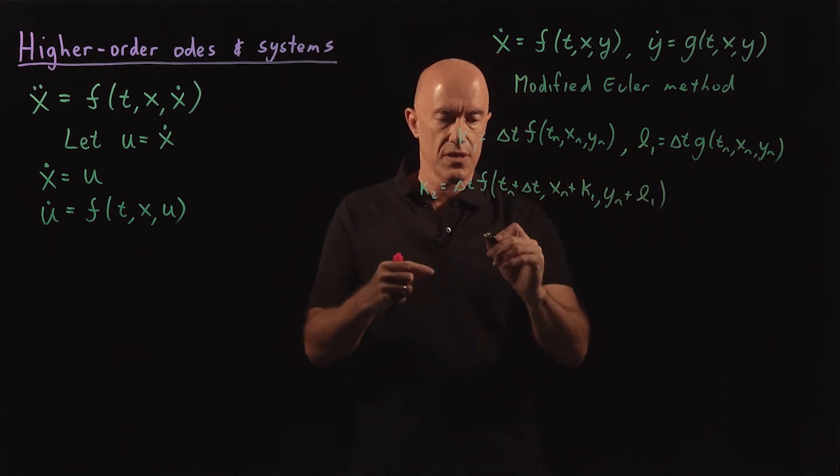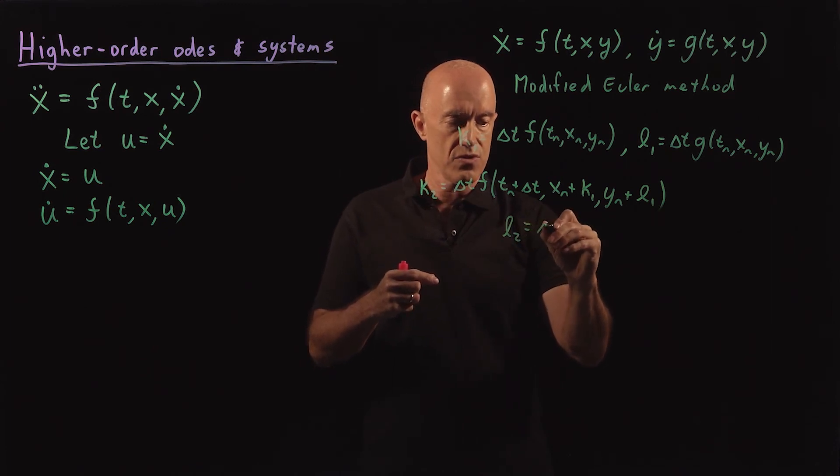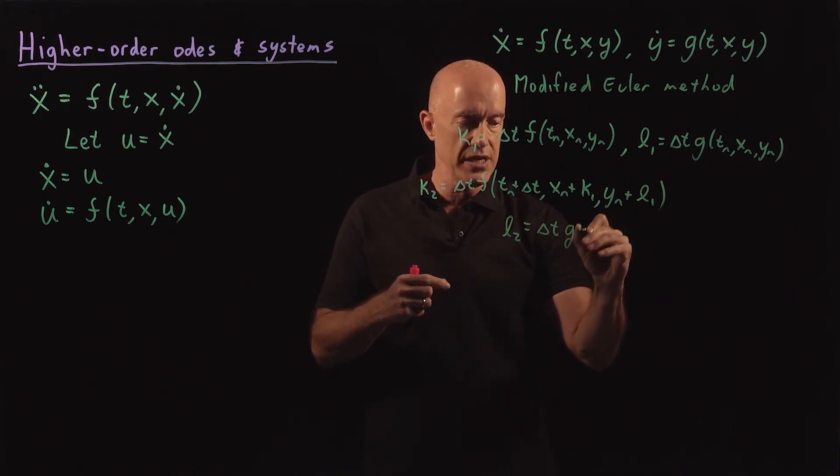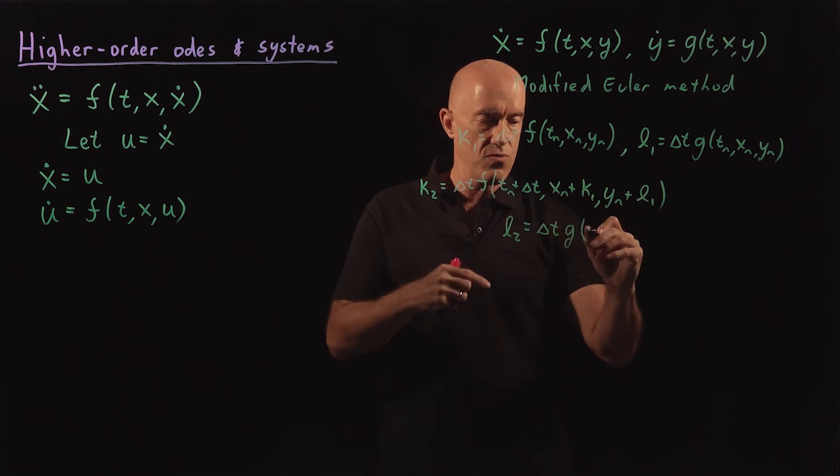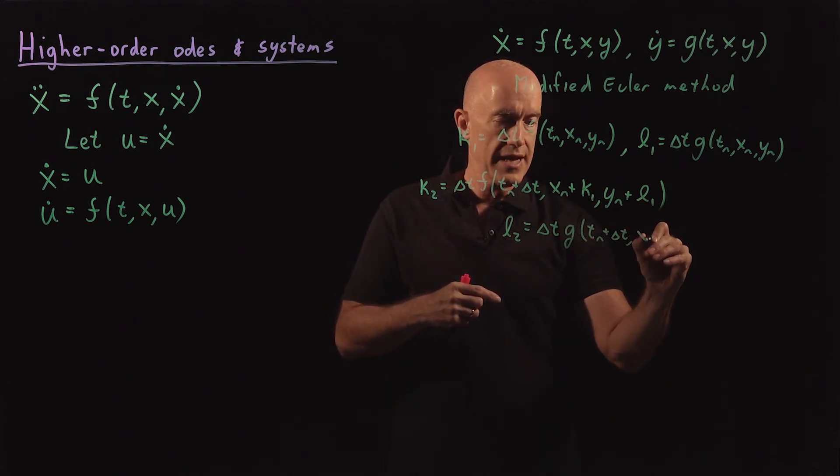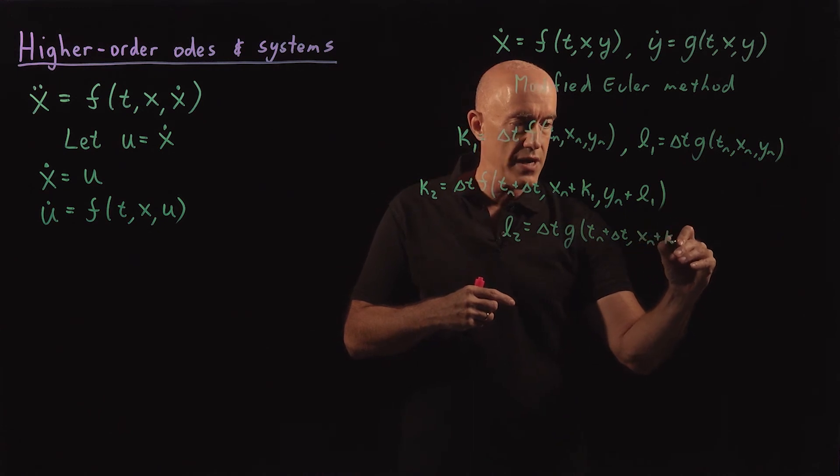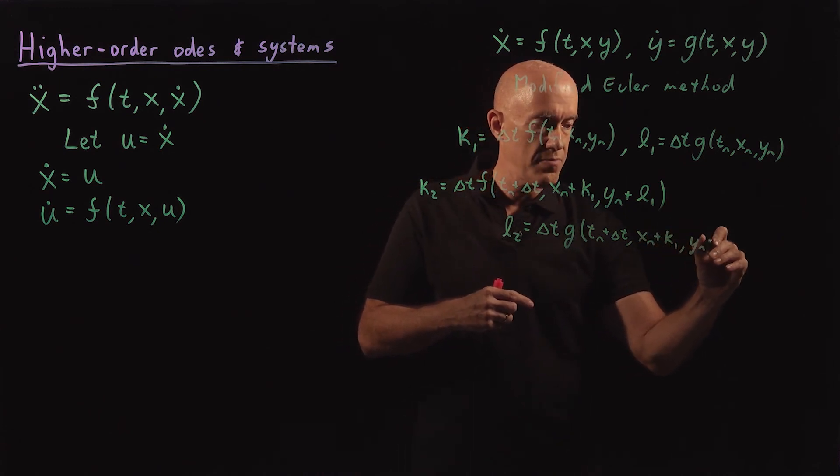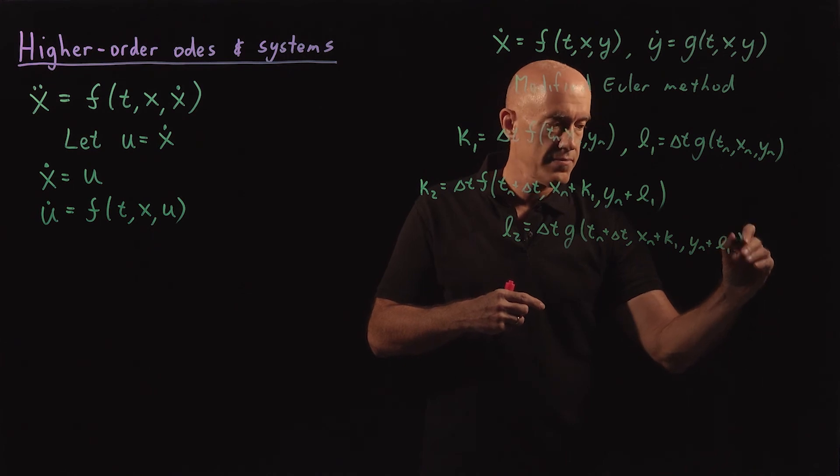At the same time, we need L2. So L2 would be delta t times g, and the arguments here would be the same. So tn plus delta t, xn plus K1, yn plus L1.